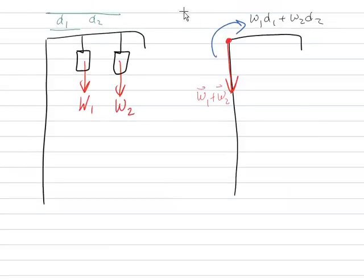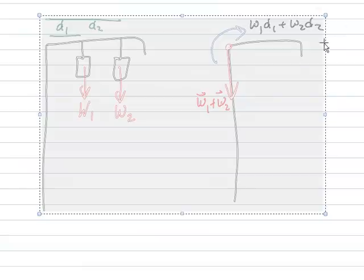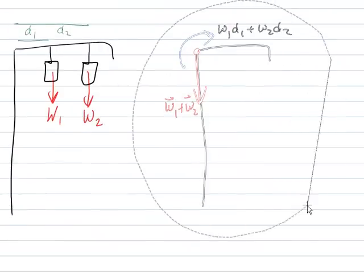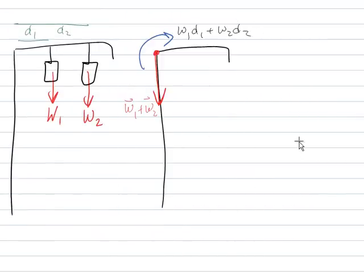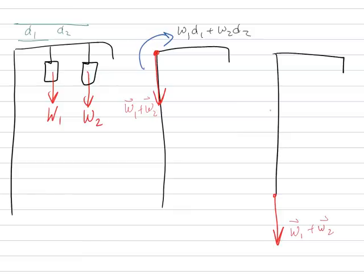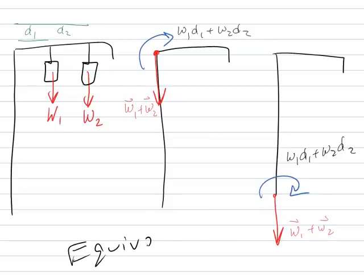If I got really desperate, since these are free vectors, I could go in here and move the combined force down to the base, because I'm staying along the line of action. The couple moment acts in the K direction, so I could move it down here if needed, calling it W1D1 plus W2D2. Again, these are all equivalent systems.